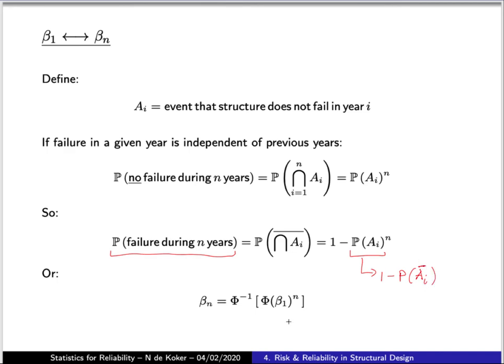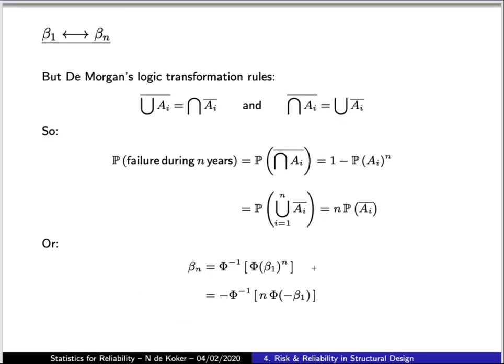So then one way that one can transform between the reliability index that corresponds to the annual probability of failure and the reliability index that corresponds to the lifetime probability of failure is through this equation. We can manipulate this a bit further to come up with an equation that does not involve this power by using De Morgan's logic transformation rules.